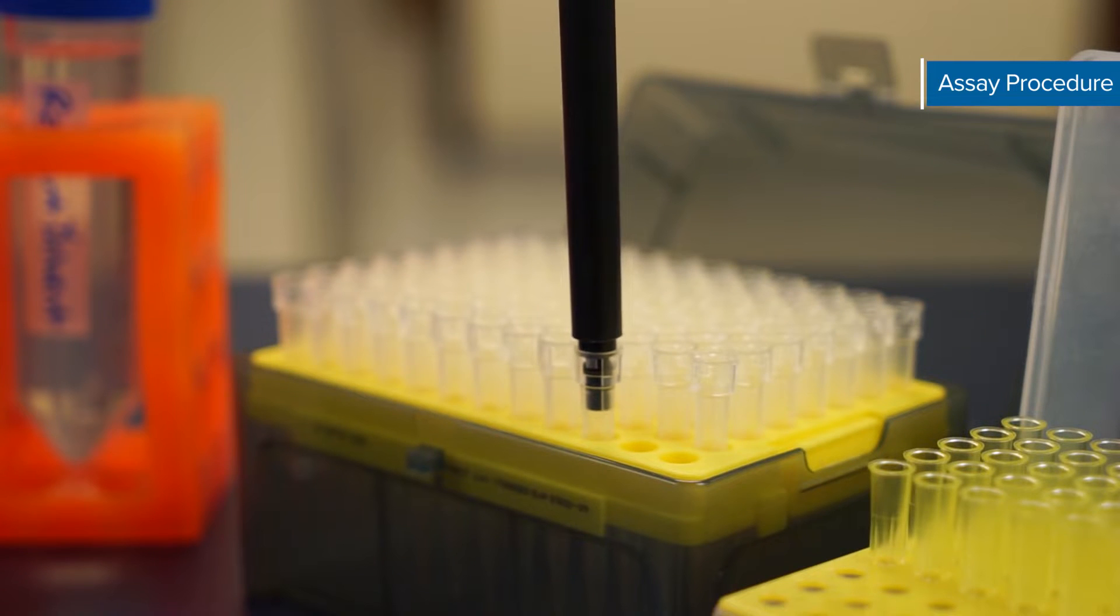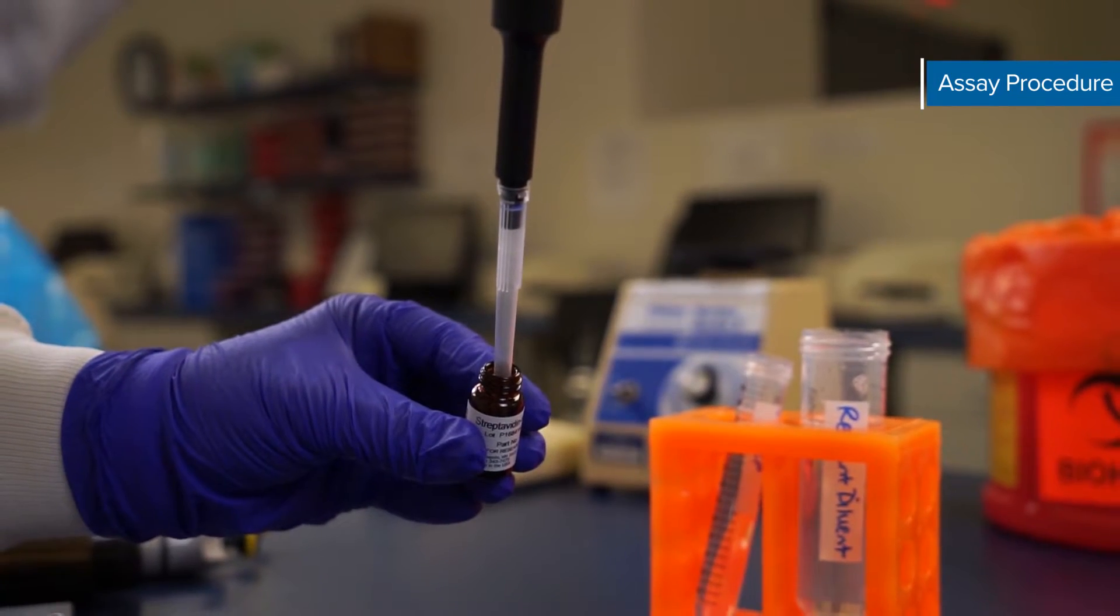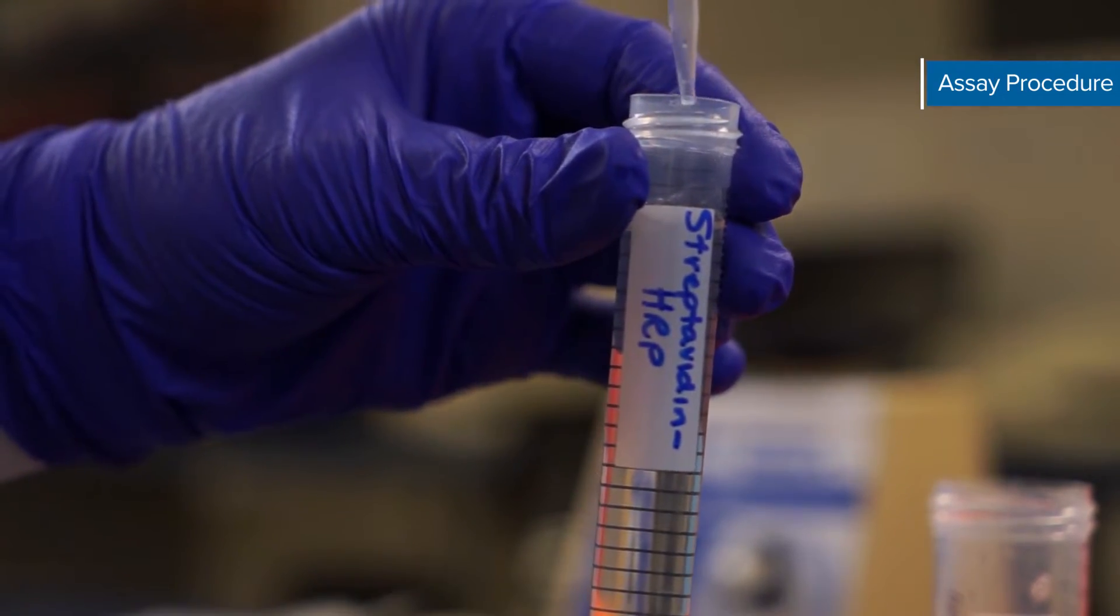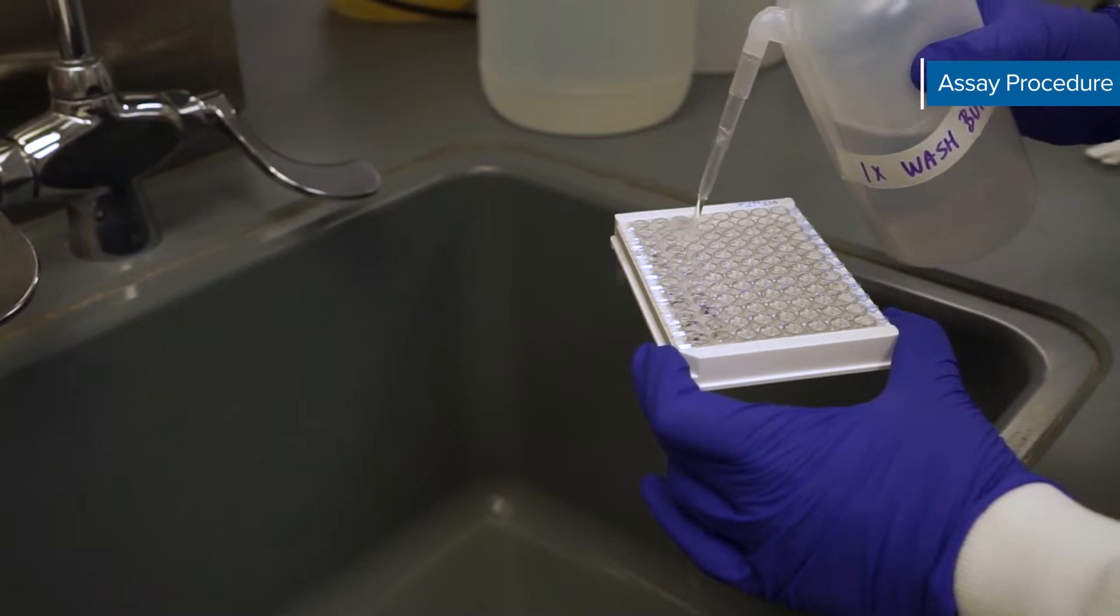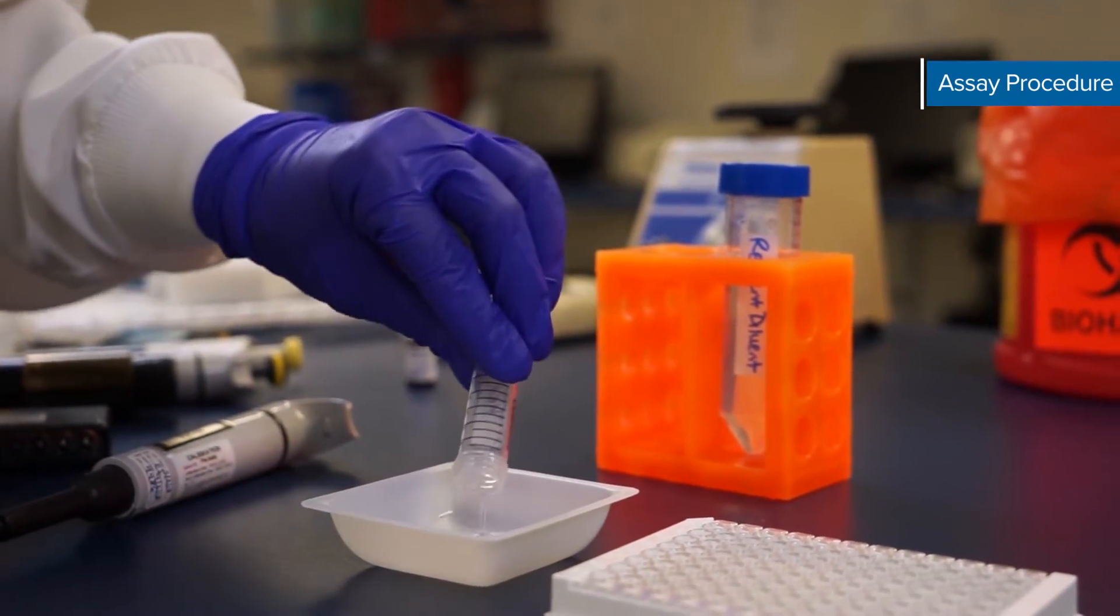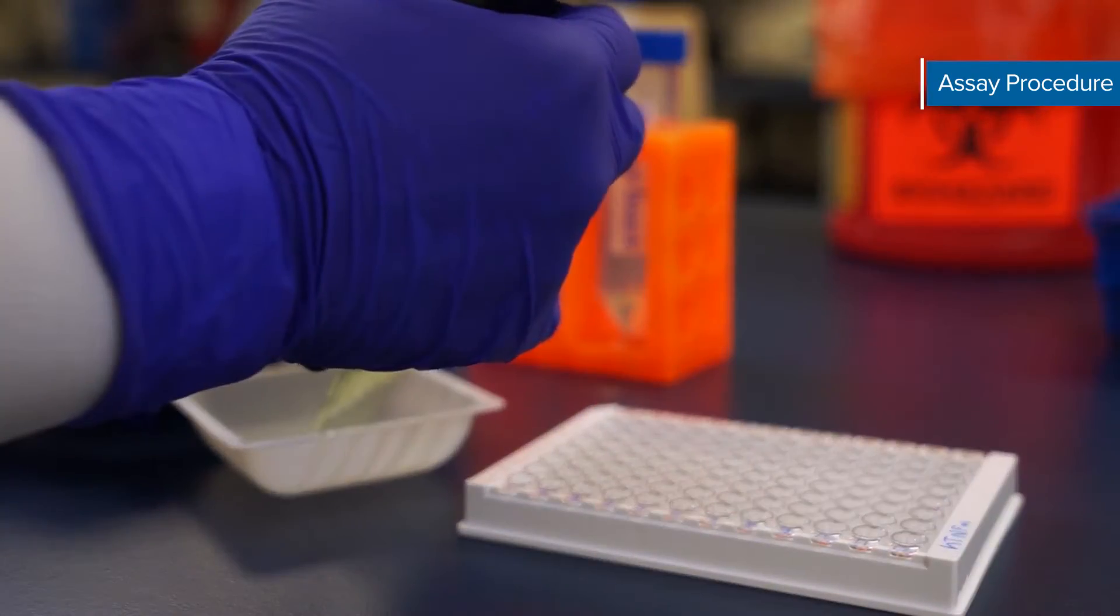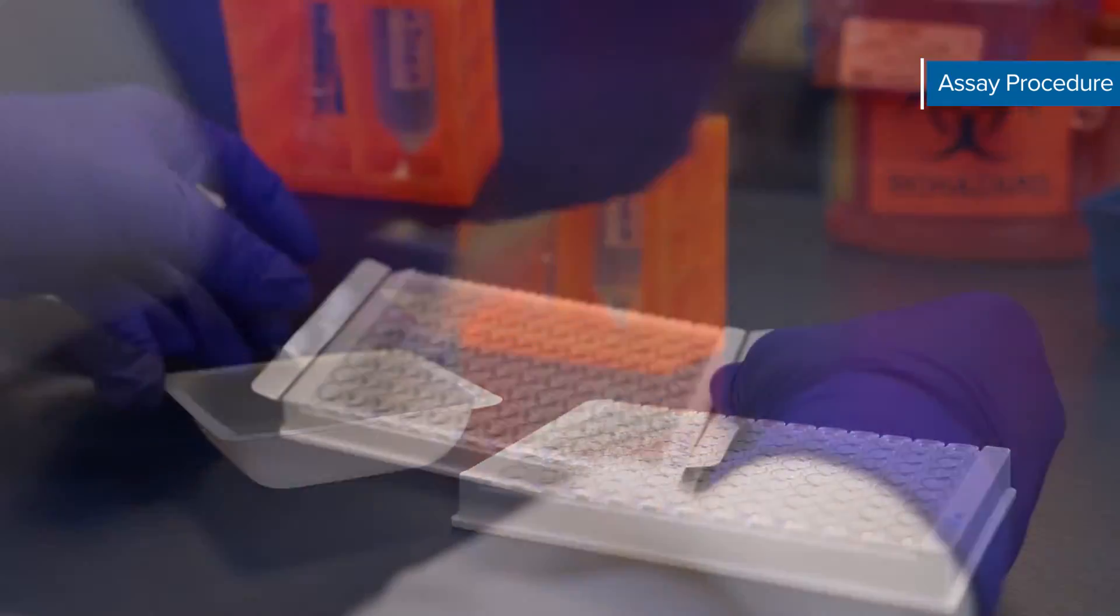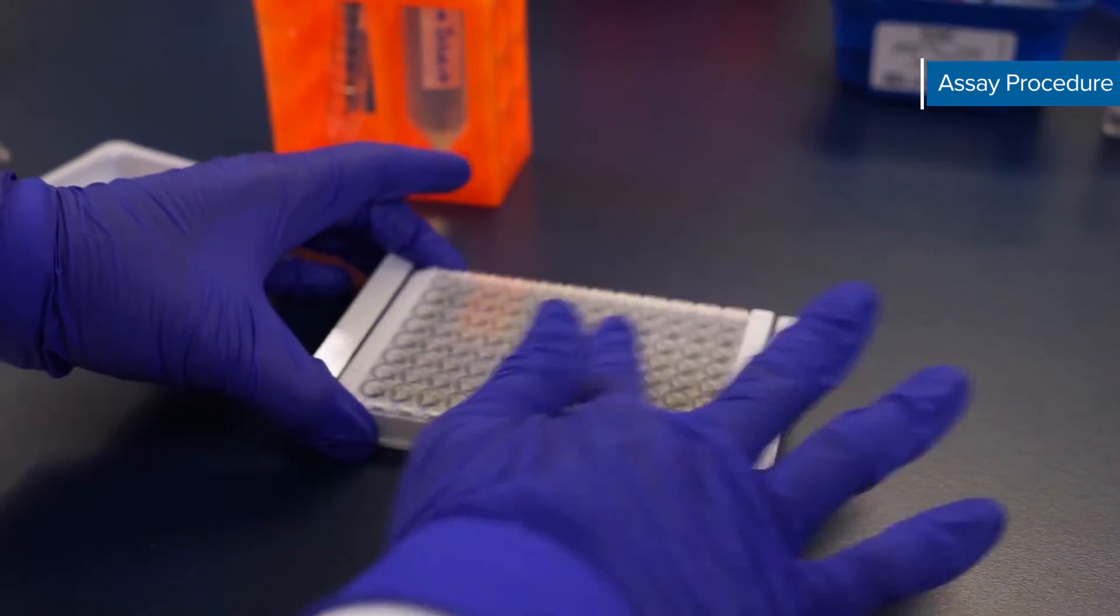During this detection antibody incubation dilute the streptavidin HRP in reagent diluent as specified on the vials label. Next repeat the wash step. Now add 100 microliters of the diluted streptavidin HRP to each well. Cover the plate and incubate for 20 minutes at room temperature on the benchtop. Avoid placing the plate in direct light.